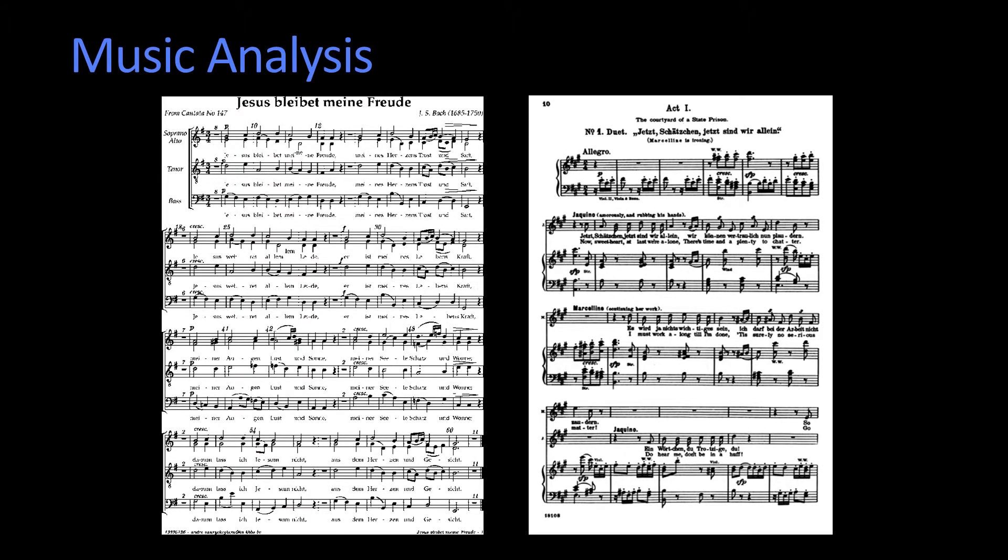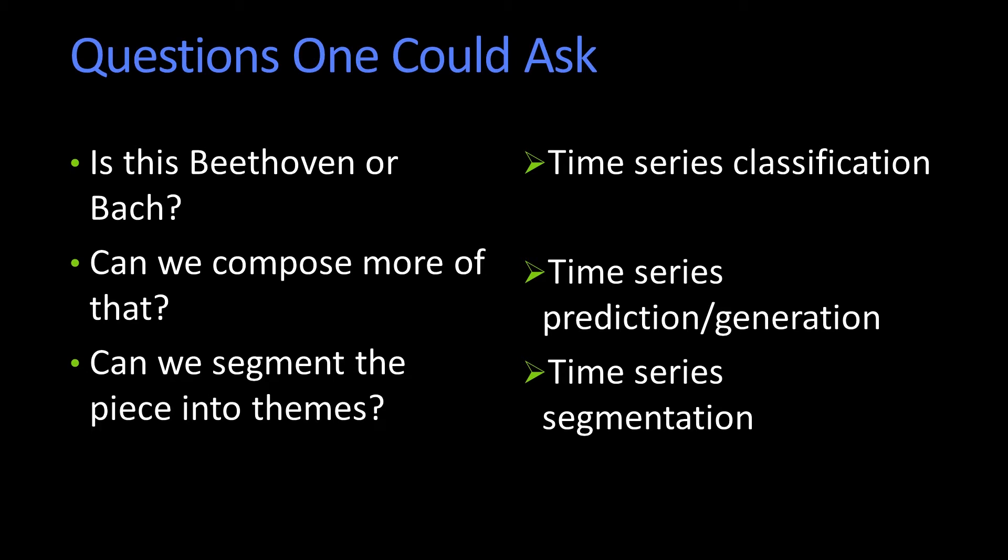Here's another example. Suppose you were listening to the audio of this music - not looking at the score as shown here, but actually listening to somebody playing it. You might ask: is this Bach or Beethoven? That's classification. Can we make more of that? That's a generative model question. Computer music people are interested in: could a machine produce more music of that type?